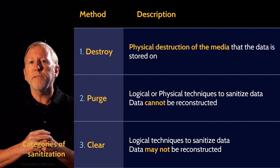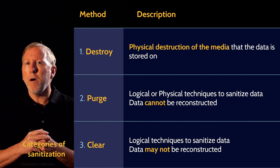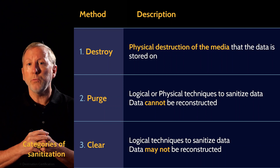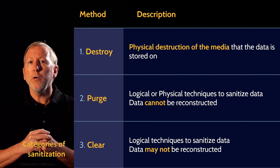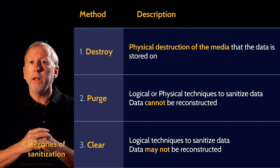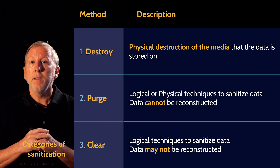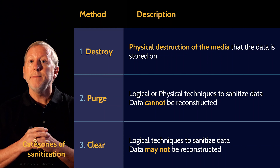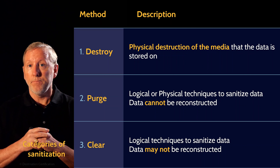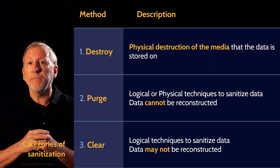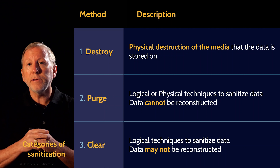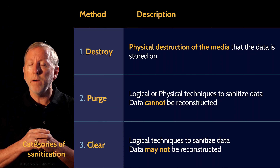While looking at the different types of sanitization, did you pick up on an important differentiation between purging and clearing? With purging, data cannot be reconstructed by any known means. With clearing, data may not be reconstructed by any known means — which also means it may be reconstructed. In fact, technology has existed for years that renders most clearing methods trivial to overcome, and data cleared by one of those methods can oftentimes be recovered.